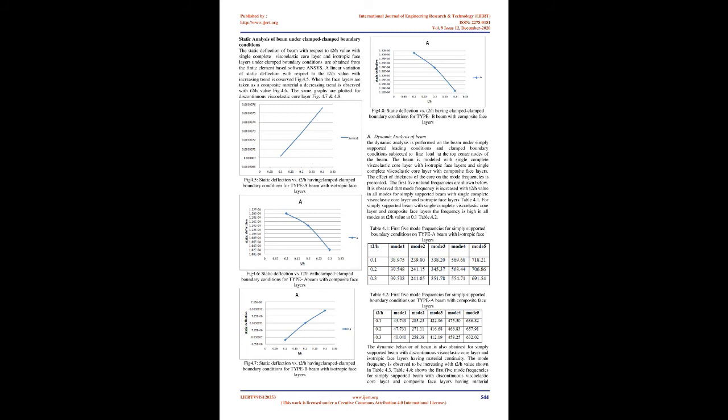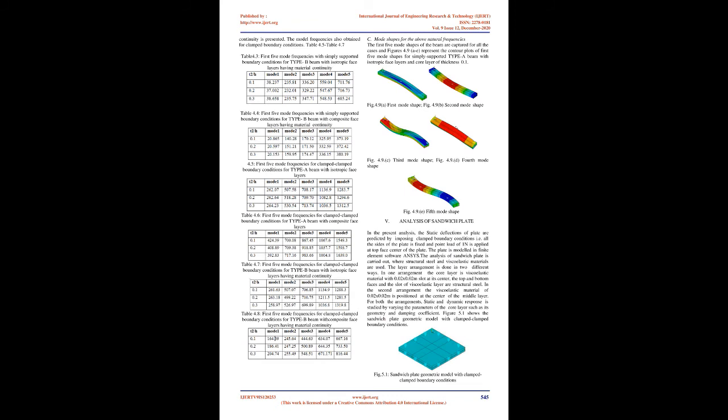Viscoelasticity is similar to creep, but part of the deformation is removed when the loading is taken off. A common viscoelastic material is glass. The analysis is carried out by taking the viscoelastic material as glass with the following properties: density = 2390 kg/m³, G0 = 27.4 × 10⁹ Pa, bulk modulus = 60.5 × 10⁹ Pa, and 1/SS = 0.53.